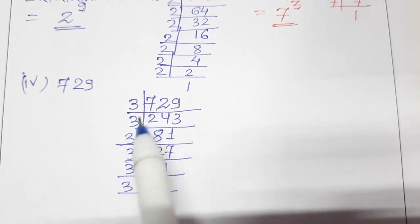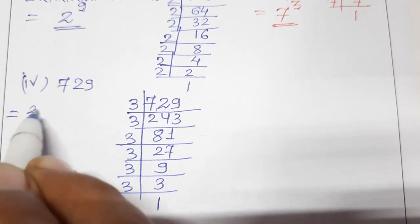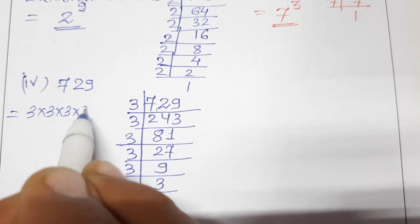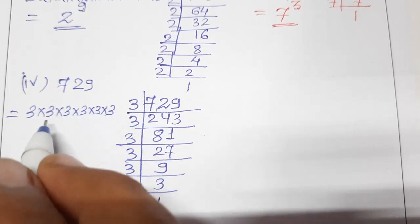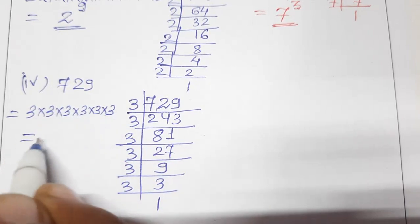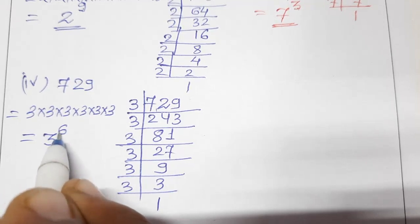So how many times 3? Count: 1, 2, 3, 4, 5, 6. So write 6 times. So this is 6 times. So write 3 raised to the power 6.